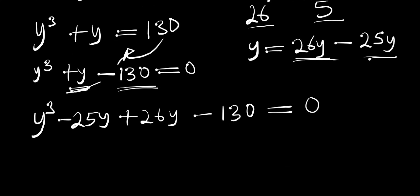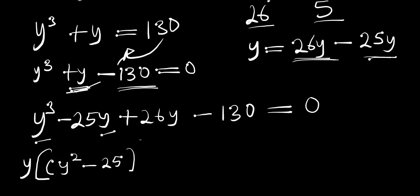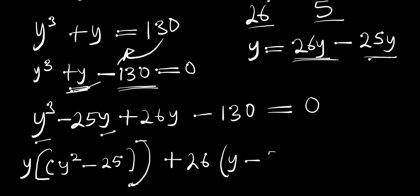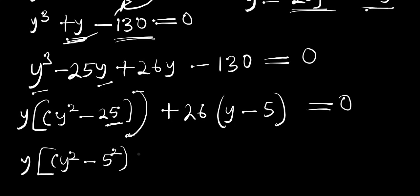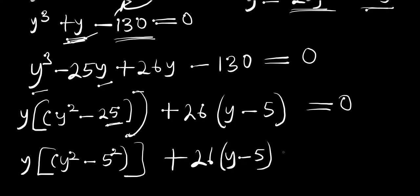We factor by grouping. From the first two terms we factor out y: y(y² - 25). Since 25y is a perfect square, we write it as y(y² - 5²). From the last two terms we factor out 26: 26(y - 5). So we have y(y² - 5²) + 26(y - 5) = 0.